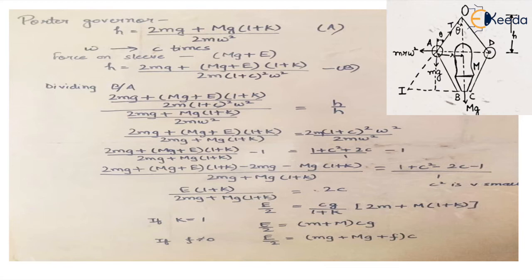We will derive the equation for the effort in the case of a Proell governor. We already know the formula for the height of the Proell governor: h = (2m·g + M·g·(1 + k)) / (2m·ω²), where k is the ratio tan(β) / tan(θ). Initially the speed is ω. Now the speed changes to a new value which is c times the original equilibrium speed ω. The force on the sleeve changes from mg to mg + E, where E is the force applied when changing the position of the sleeve.